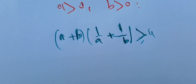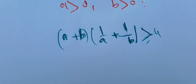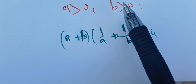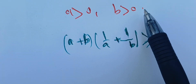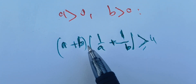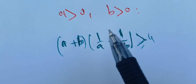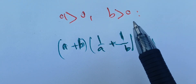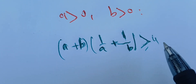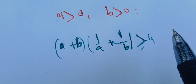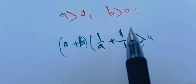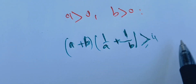In this video we're going to prove the following: if both a and b are strictly positive, then the sum of a and b times the sum of the reciprocals is greater than or equal to four. There are many ways to prove this result.